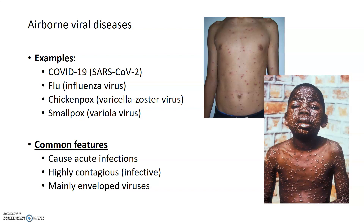Some of the common features of airborne viral diseases — viruses transmitted through the air — are that they cause acute or short-term infections. They're highly contagious and infective, so once host cells are exposed to the virus, the chance of becoming infected is relatively high. Airborne viral diseases are caused mainly by enveloped viruses.